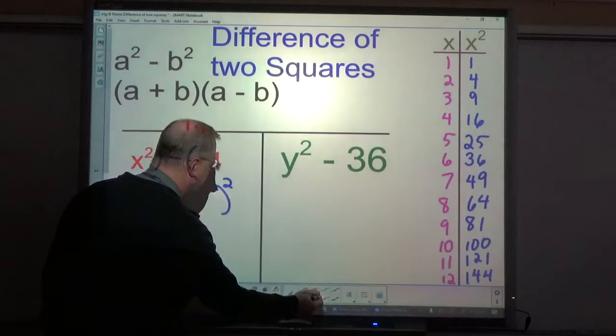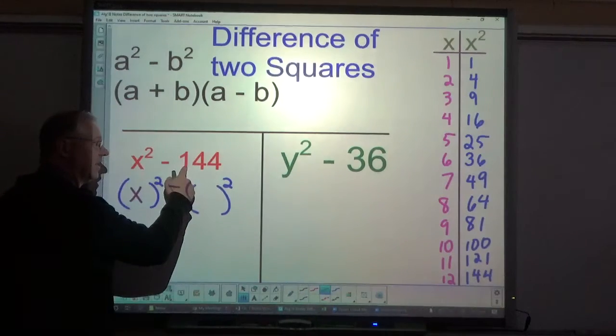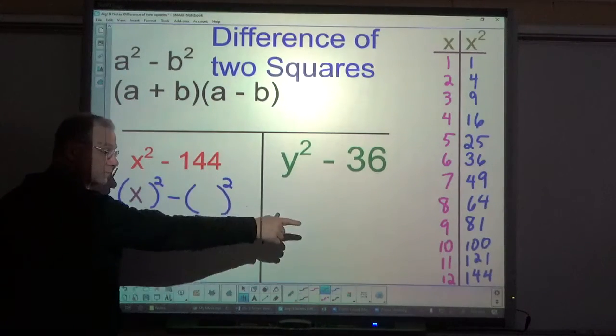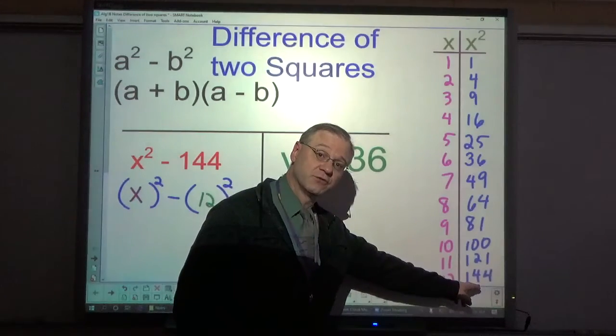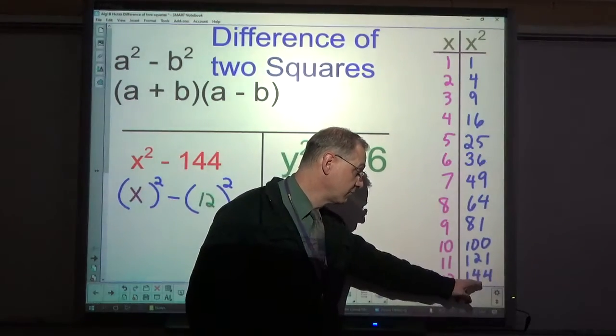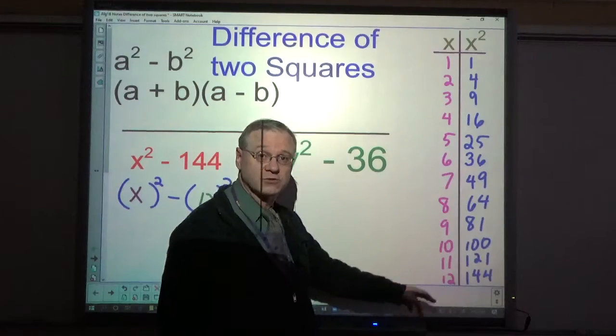What squared gives me x squared? X. What squared gives me 144? Oh, 12. You can see 12 squared is 144. If I look here, 144, that's 12 being squared.